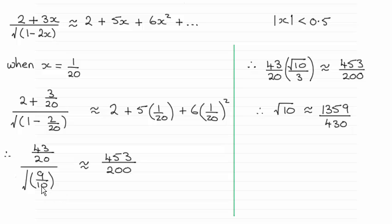Just cleaning this fraction up means that if we take the square root of 9, that's 3 over root 10, and then we can get it down to this. And then just make root 10 the subject by multiplying by 60 and dividing by 43 to this fraction, and it gives us the result we're after.